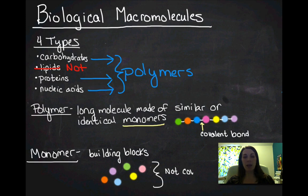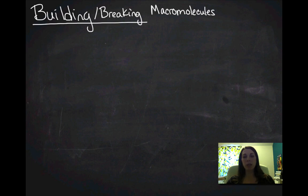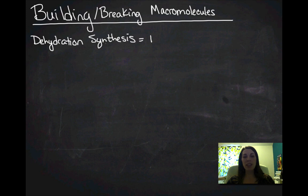So let's talk about how we actually bond them together. Because I've got these monomers and they're not covalently bonded to each other, and I need to somehow make them into the polymers, which are covalently bonded to each other. So I'm going to build or break down my macromolecules through one of two processes. And these should be familiar to you from chemistry. The first that we're going to cover is dehydration synthesis.